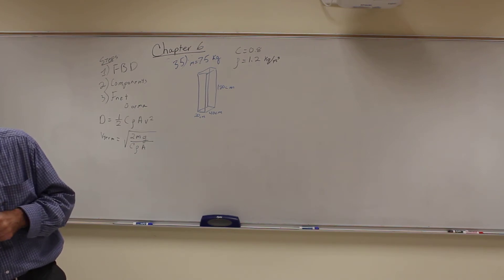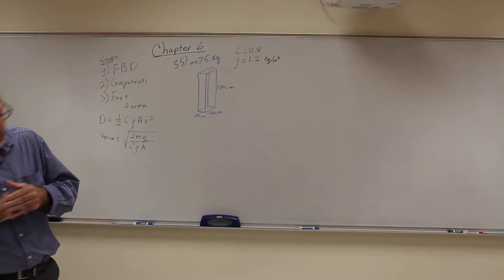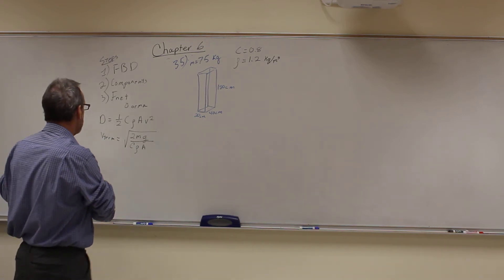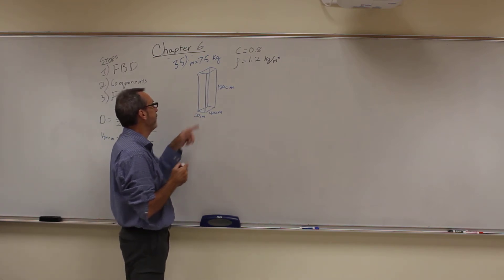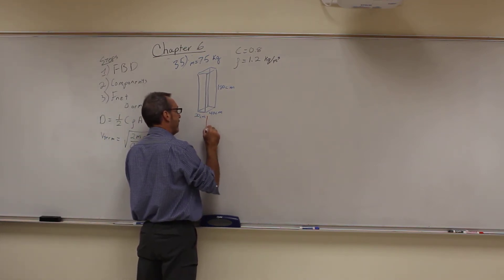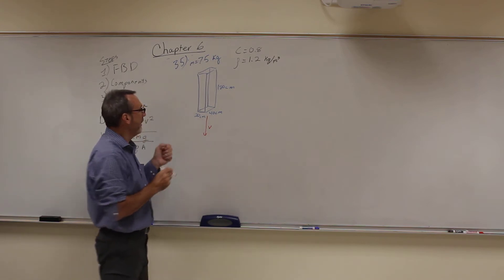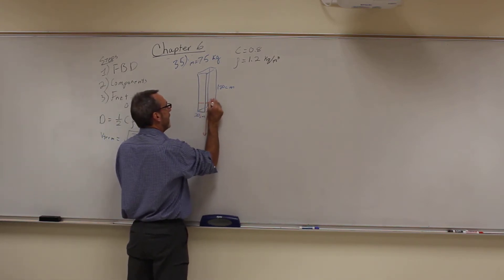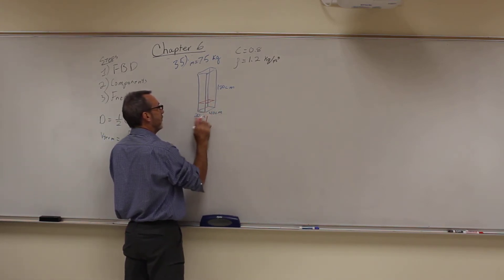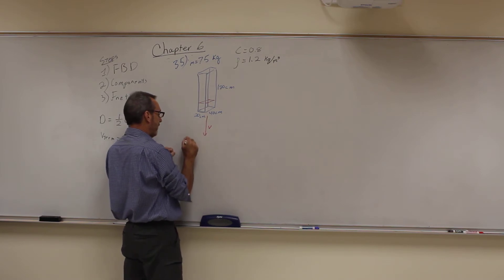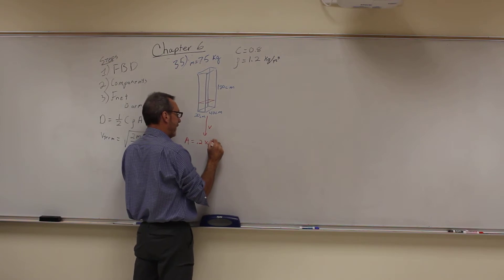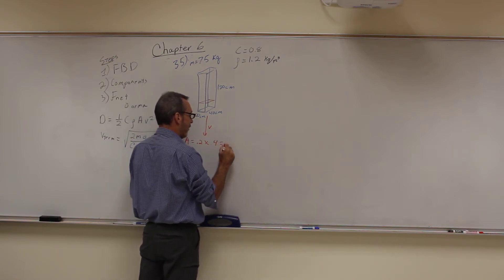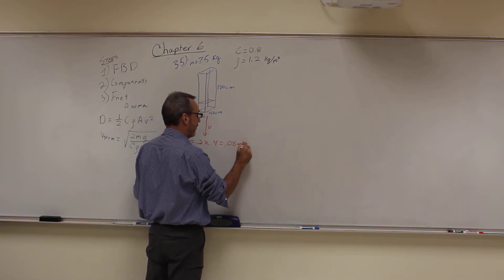All we have to do is plug this into our terminal velocity equation, but first we have to figure out his area. They say feet first, so if he is falling feet first then the velocity is this way. Then all I need is a rectangular section like this, and the rectangle is just 20 times 40. The area is—we have to do it in meters—so this becomes 0.2 times 0.4, or 0.08 square meters.